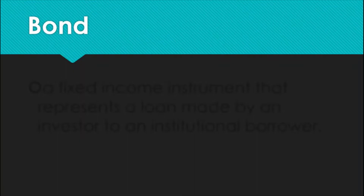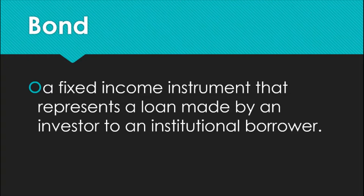What is a bond? A bond is a fixed income instrument that represents a loan made by an investor to an institutional borrower. The investor can be anyone in the public who wishes to lend money for the purpose of earning interest. Borrowers of bonds are generally institutional, meaning they are either corporate or government agency borrowers.